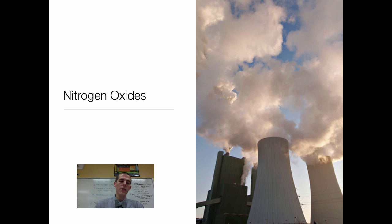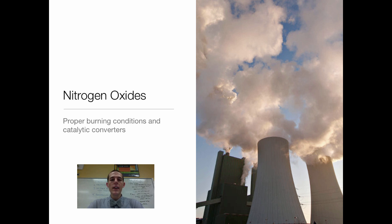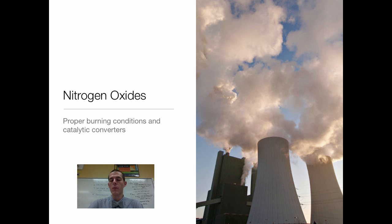Then we've got our nitrogen oxides — our NOx. One way to reduce NOx emissions is with proper burning conditions. If you burn fuels at a lower temperature, they will release fewer nitrogen oxides, and also if you burn them with less air present, you get fewer nitrogen oxides. The problem is if you burn things at a lower temperature, they won't burn as efficiently, meaning you get more particulates and more carbon monoxide. So there's a fine balance: burning at high temperature gives you lots of nitrogen oxides but fewer carbon monoxide and fewer particulates, while burning at lower temperature gives you less nitrogen oxide but more carbon monoxide.